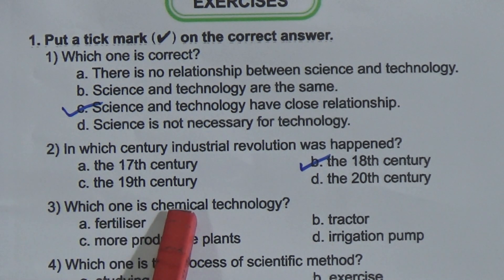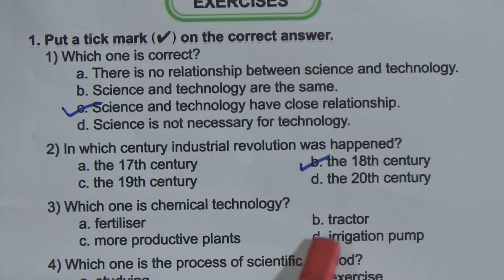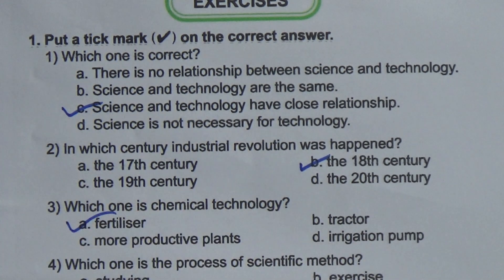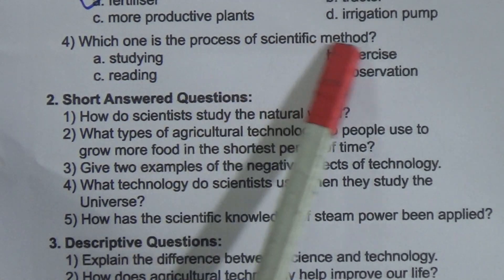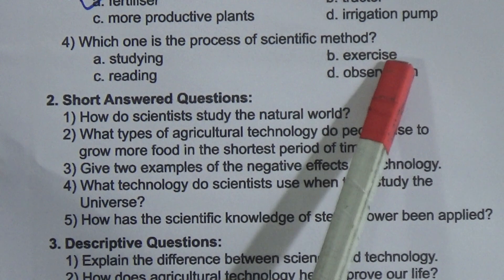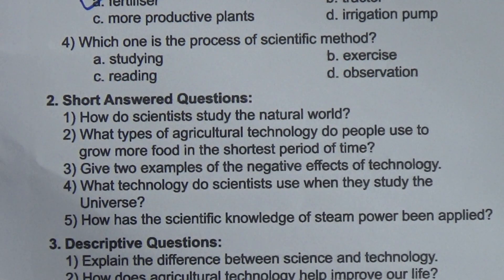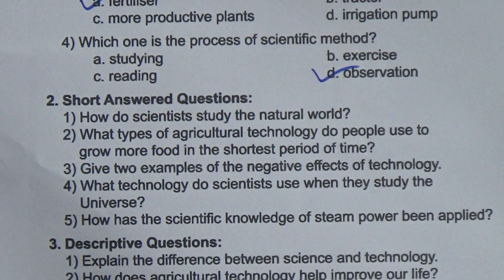Question 3: Which one is chemical technology — fertilizer, tractor, more productive plants, or irrigation pump? The answer is fertilizer. Question 4: Which one is a process of the scientific method — studying, exercise, reading, or observation? Observation is the step of the scientific method.